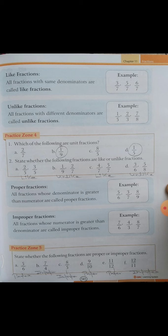Now come to question number 2: state whether the following fractions are like or unlike fractions. Ab like fraction aur unlike fraction batana hai. Like fraction kaun se hote hain? The fractions with the same denominator — jiske andar same denominator ho, wo kya hota hai? Like fraction. Aur jiske andar denominator alag-alag ho, wo kya hota hai? Unlike fraction. Ab A part: 2 by 5 and 3 by 5 — like fraction. B part: 1 by 9 and 2 by 7 — unlike. C part — like fraction. D part — unlike fraction. Ye saare questions aap notebook ke andar solve karenge.